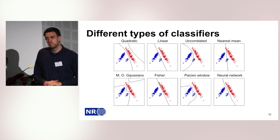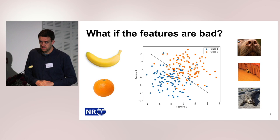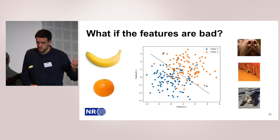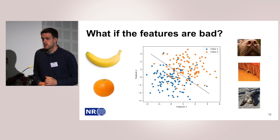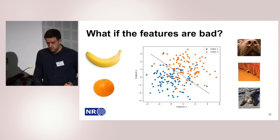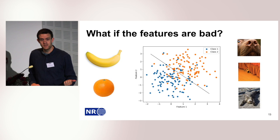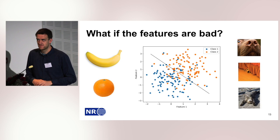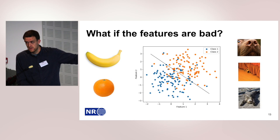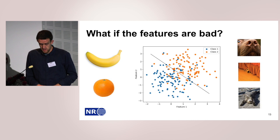Work on classifiers has been very good lately, but the problem arises when the features are bad. For simple images, it's very easy to compute nice features — for instance, shape and color are enough to separate bananas from oranges. But if the images look more complex, or if they are seismic images, it's not that easy to compute features. The classifier is good, but feature engineering can be a problem.